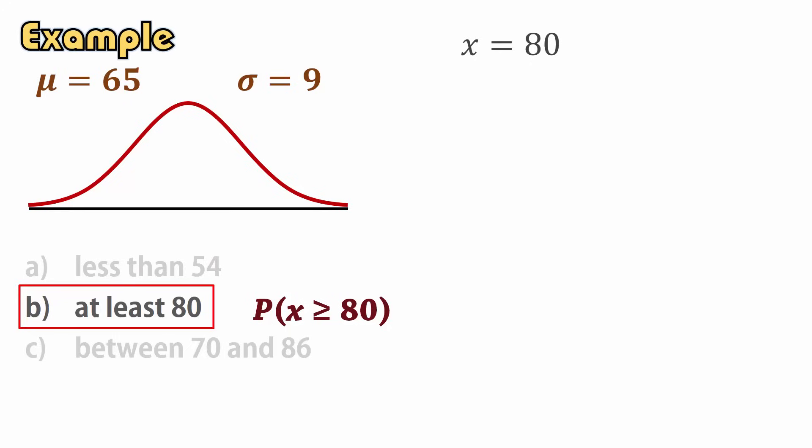So for x equals 80, z equals 80 minus 65 divided by 9, and that gives 1.67 to 2 decimal places.